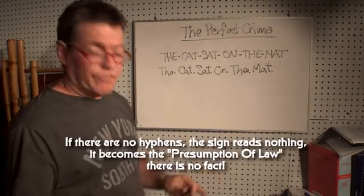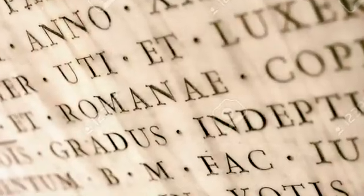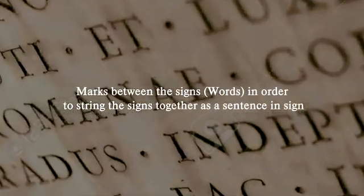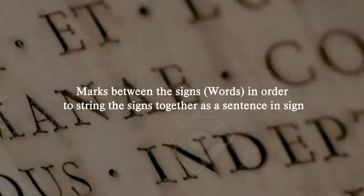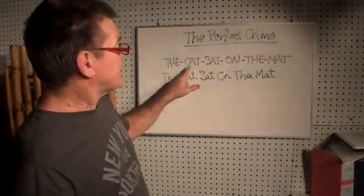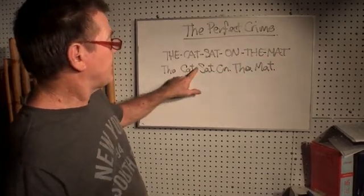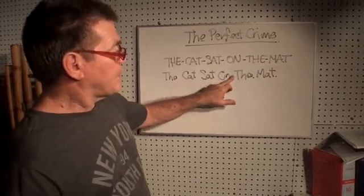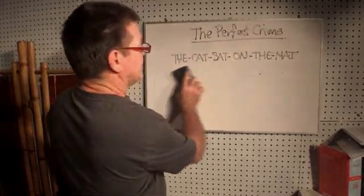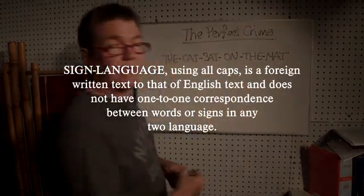So when you know the correct way to read sign — or how it is meant to be — so that two or more signs can be put together into a sentence, the signs must be hyphenated. Because sign language follows the grammatical rules of ancient Latin, and it also uses ancient Latin, which is the all-uppercase symbolic text, to create signs. So when you write 'the cat sat on the mat' and you put the hyphens in between, it strings the whole lot together into a sentence.